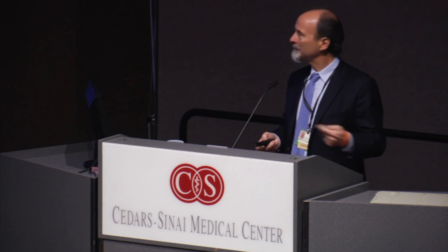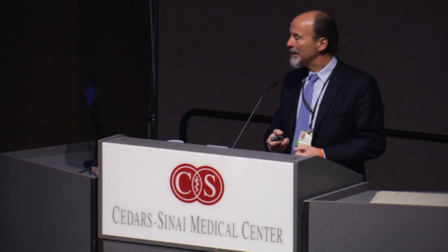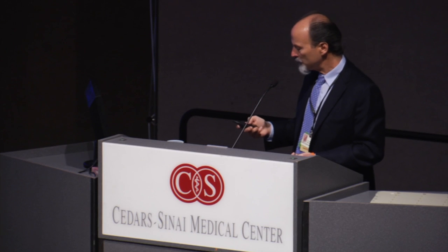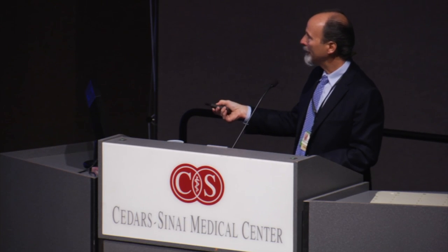Sometimes it's not so simple and we need to employ special testing through the use of antibody immunohistochemical studies, or even sometimes molecular analyses, to put it into a diagnostic category of renal cell carcinoma. Once we've done that, the next phase is to determine the subtype. There are many different subtypes based primarily on the appearance of the tumor cells and their architectural growth patterns, and sometimes we need to rely on immunohistochemicals or molecular and genetic profiles to determine the proper subtype.